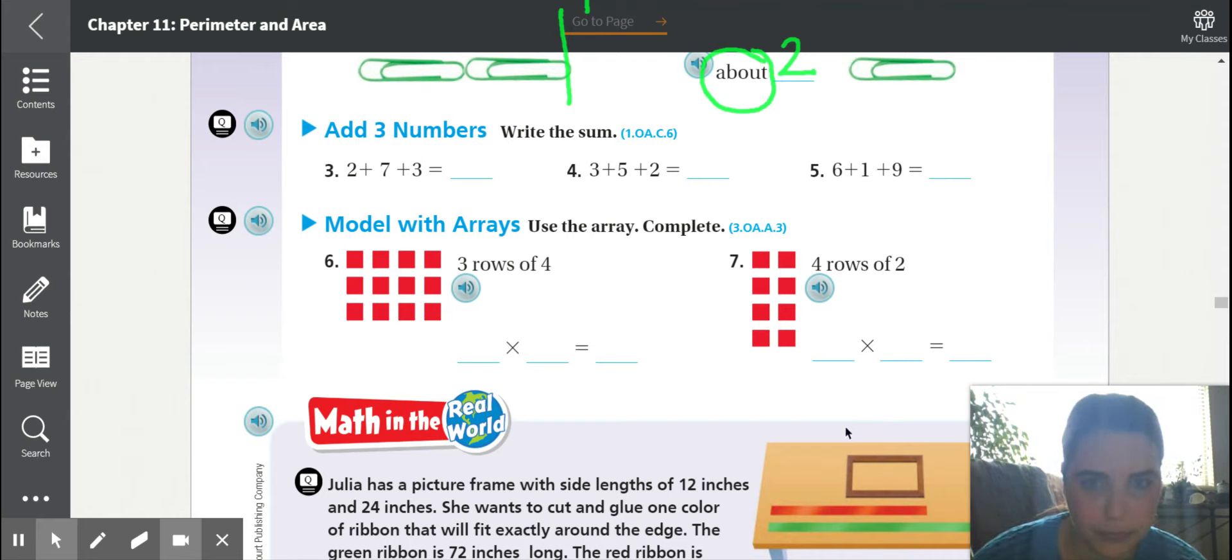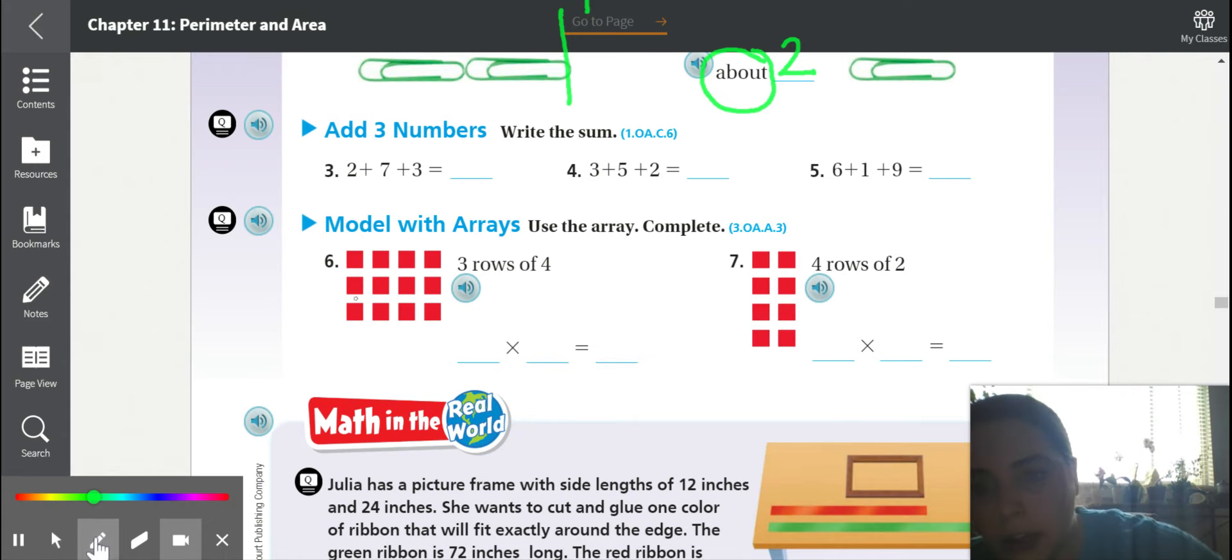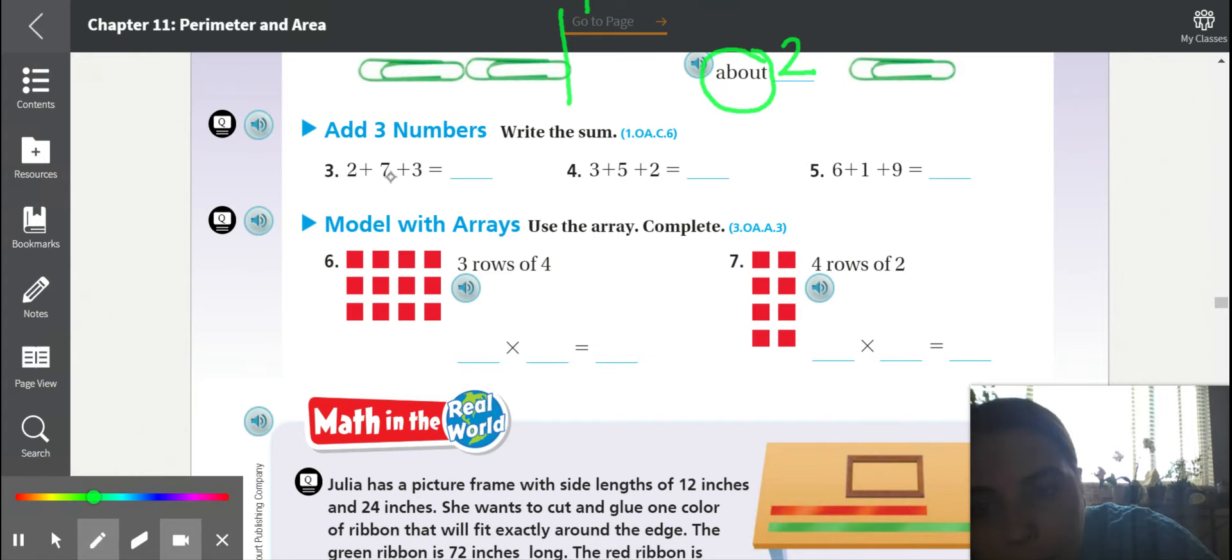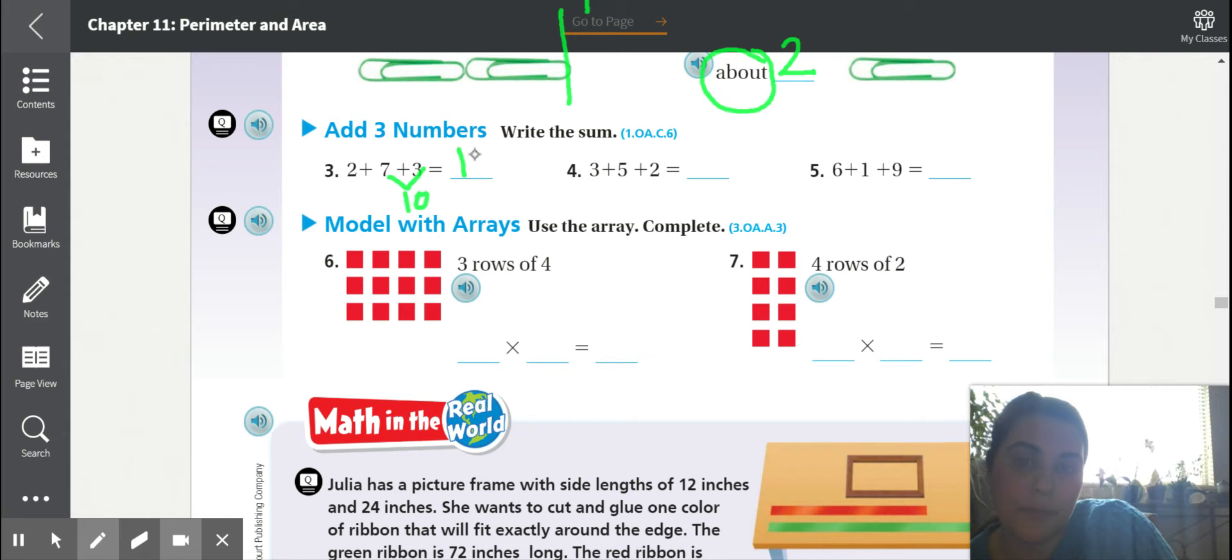Let's do number three together, and then you'll do four and five on your own. Number three, two plus seven plus three. Right away, I'm thinking of how can I make a 10, because adding 10s is easy. I know that three plus seven is 10, and then I can just easily add two plus 10 is 12. Do number four and five on your own. I'll give you 10 seconds, 15 seconds.